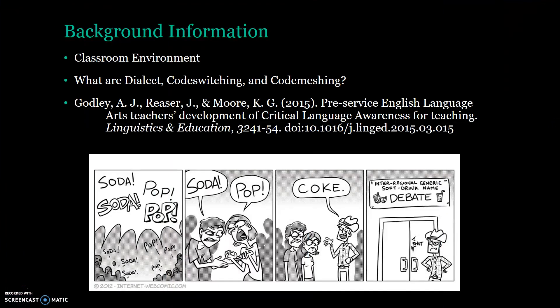A little background information: in the classroom, the environment is extremely important to student learning. So that brings us to our next point — what are dialect, code switching, and code meshing? Dialect is the type of language from a particular region or social group. Code switching is going back and forth between those languages. And code meshing is when you incorporate elements of those languages into whatever language you're speaking.